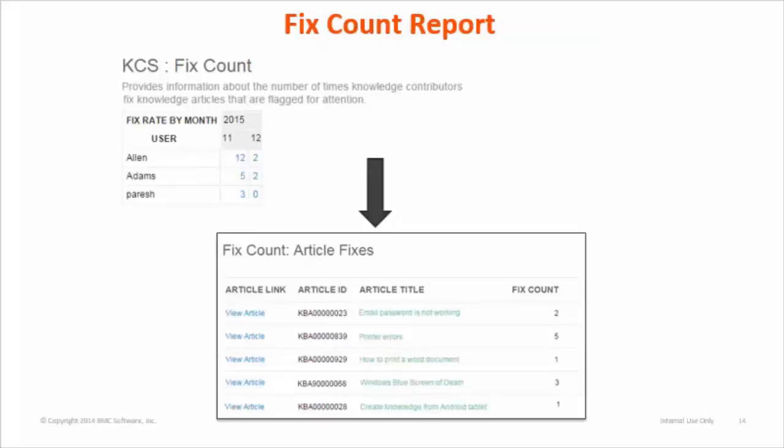This is the Fixed Count report. This report helps KCS coach to find out the number of times his or her team members have fixed issues in articles flagged for improvement. An article is fixed when a user selects the 'I am unflagging this' checkbox in the flagged comment area in Smart IT. The user may or may not update the article before unflagging it. To view article fixes details for an article, click on fix count and you will see the child report.